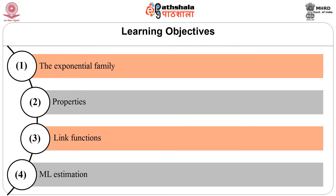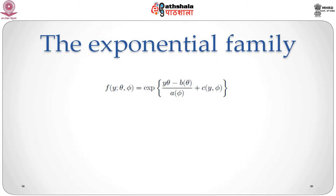The learning objectives for this module are: first, to introduce the exponential family; next, to look at its properties; to relate to the concept of regression, we will introduce the concept of link functions; and finally we should look at the details of maximum likelihood estimation for the one-parameter exponential family.